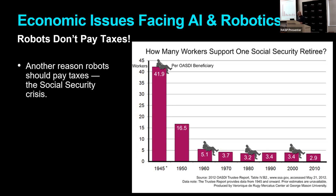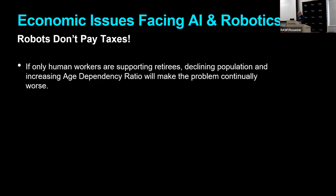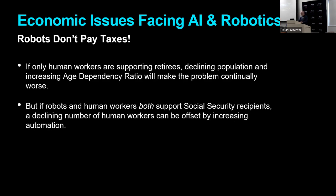This graph ends in 2010, before most of the boomers retired. If only human workers are supporting retirees, our declining population and the increasing age dependency ratio is going to make this problem continually worse. But if robots and human workers both support social security recipients, a declining number of human workers can be offset by an increasing number of robots or other forms of automation.